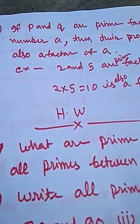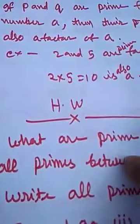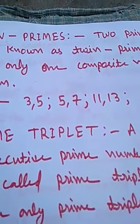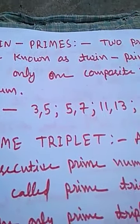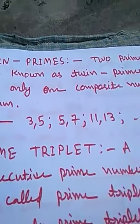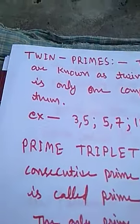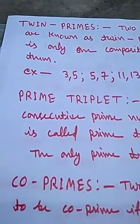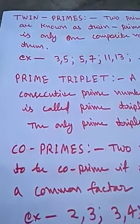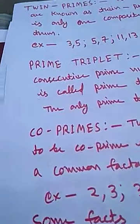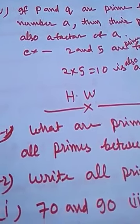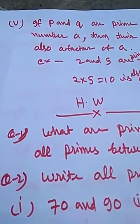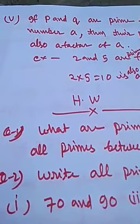Students, I hope all of you are able to understand this topic. In summary: twin primes are two prime numbers with only one composite number between them; a prime triplet is three consecutive prime numbers differing by 2; co-primes are two numbers whose HCF is 1; and we covered some facts about prime numbers.